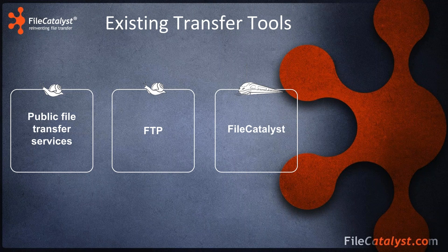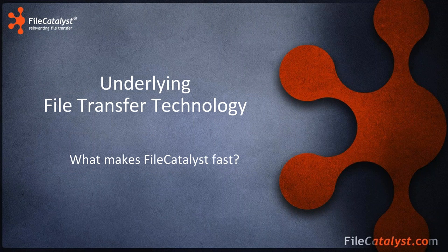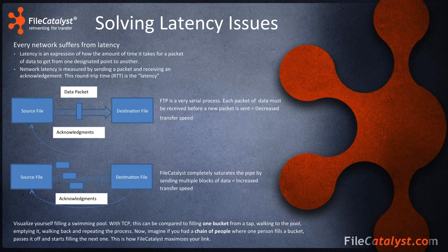Let's look at the underlying transfer technology and what makes File Catalyst fast. The biggest thing that makes file transfer slow with TCP-based file transfer is latency — the round trip time it takes for a packet to be sent from source to destination and for an acknowledgement to be received. TCP-based tools including FTP use a very serial process: packets are sent, acknowledgements are received, then more packets are sent. This is fine with no latency, but with high latency it can take a long time for acknowledgements to come back.